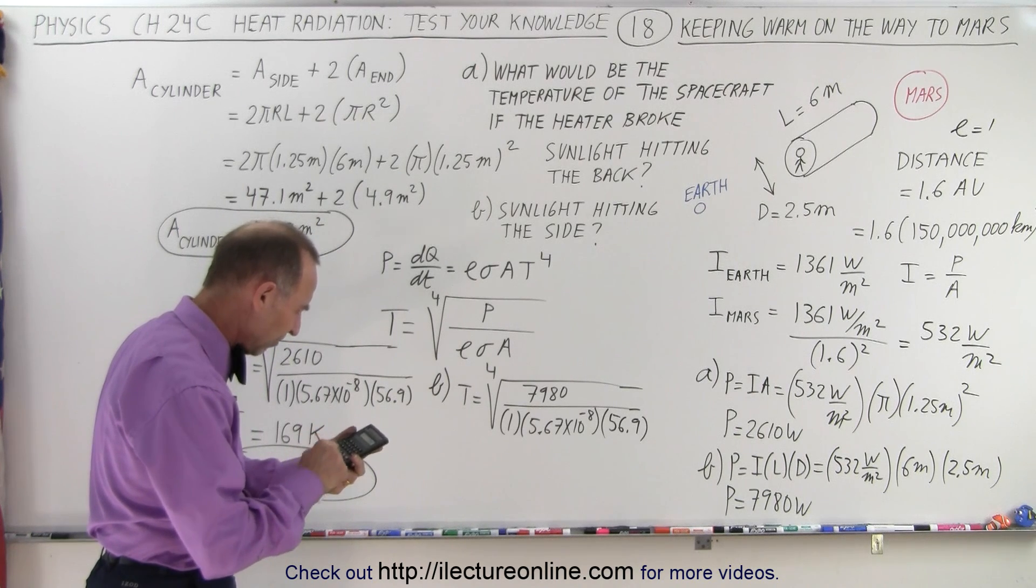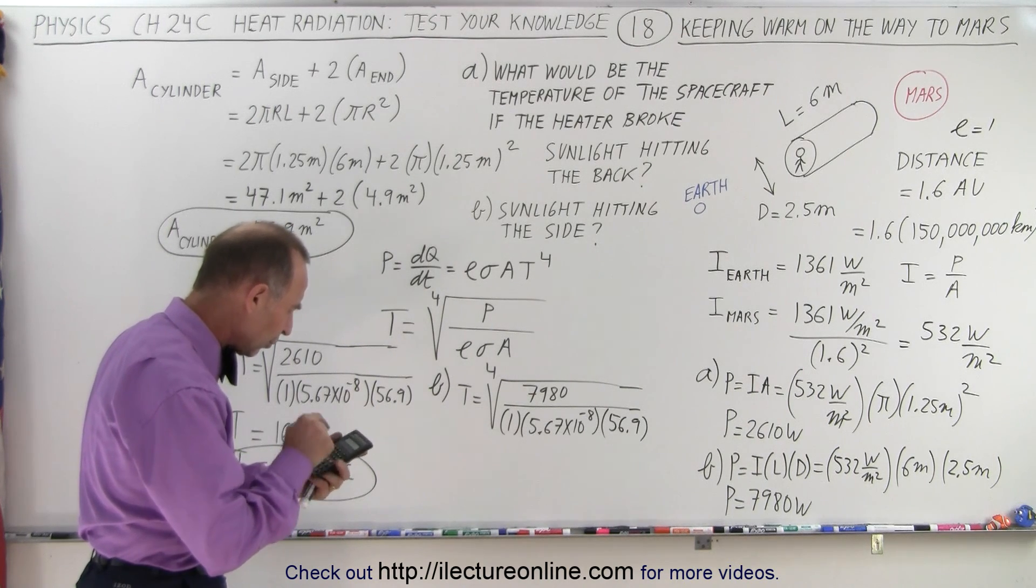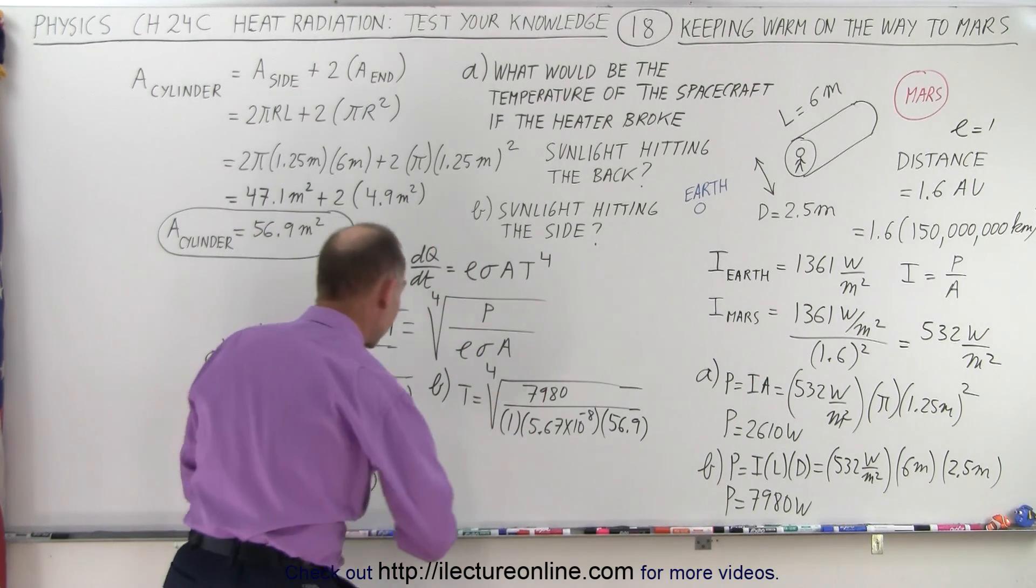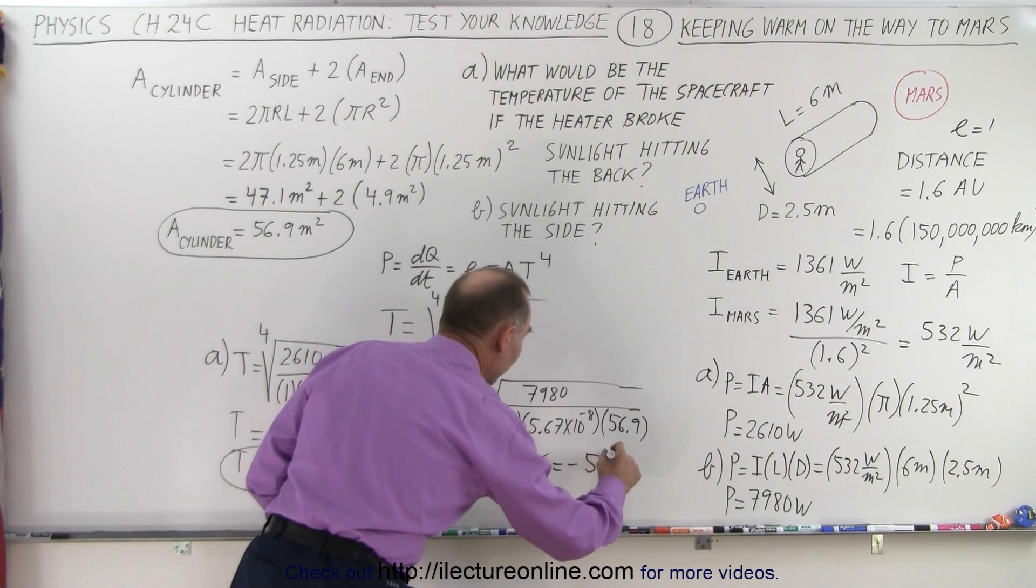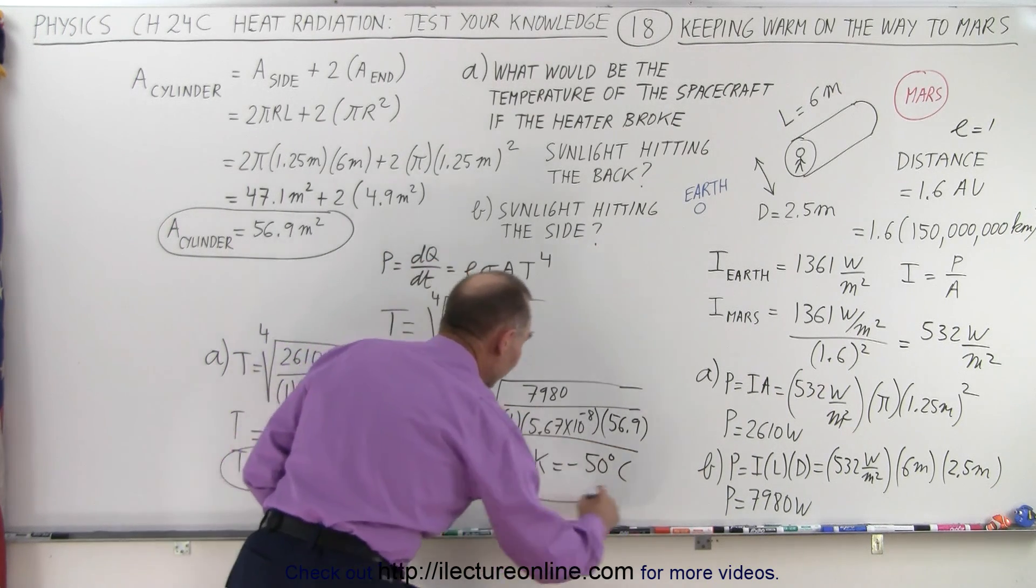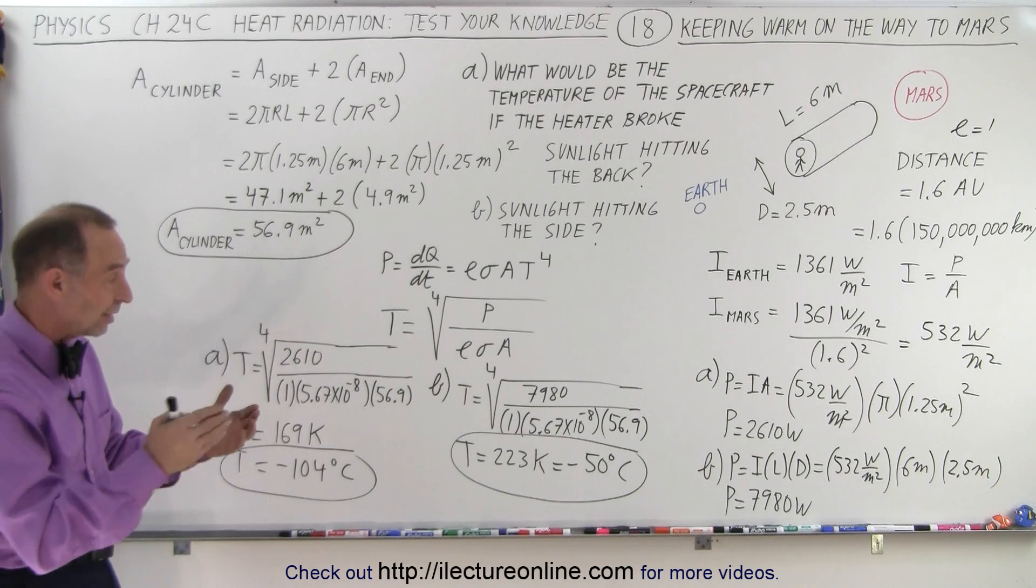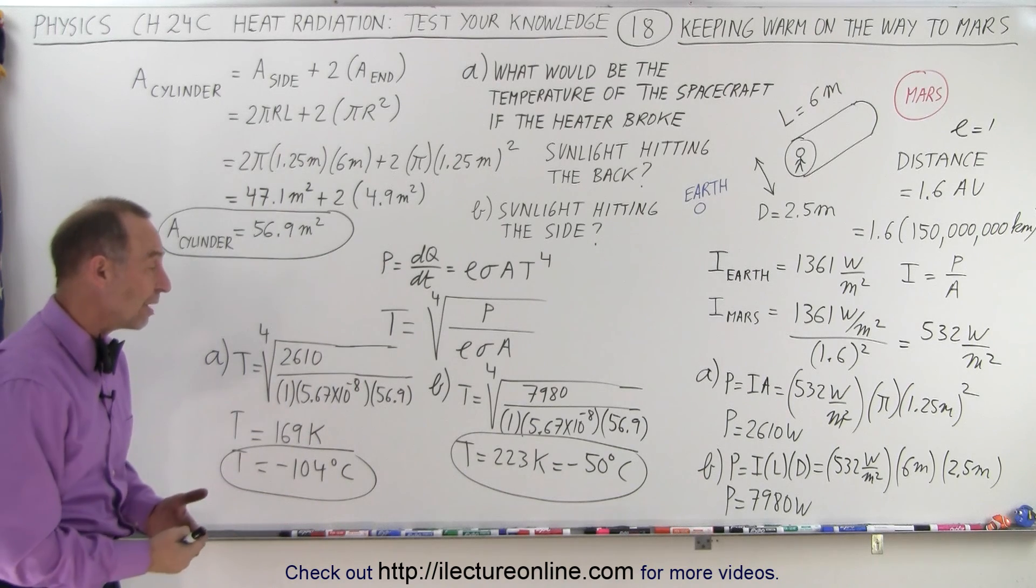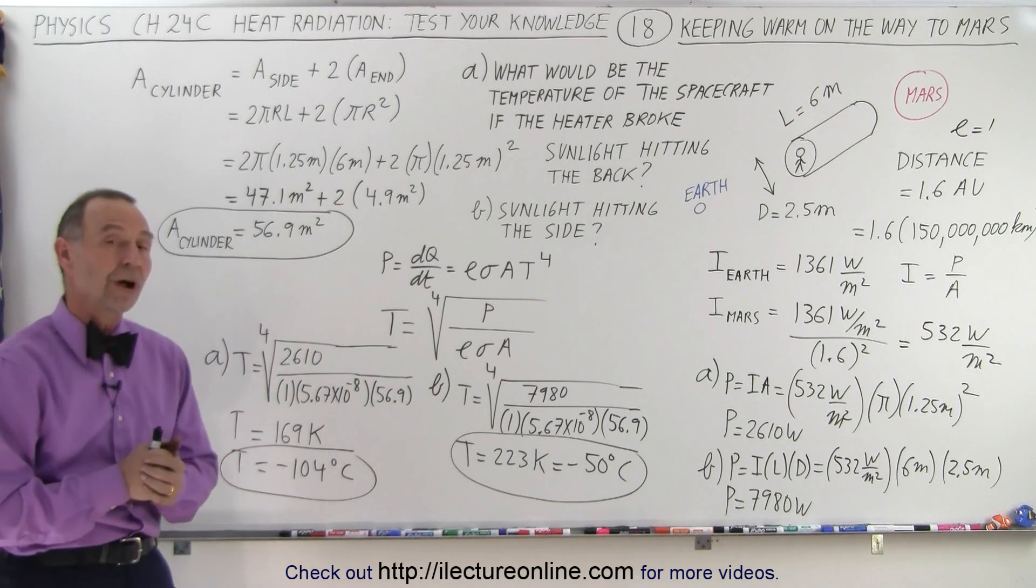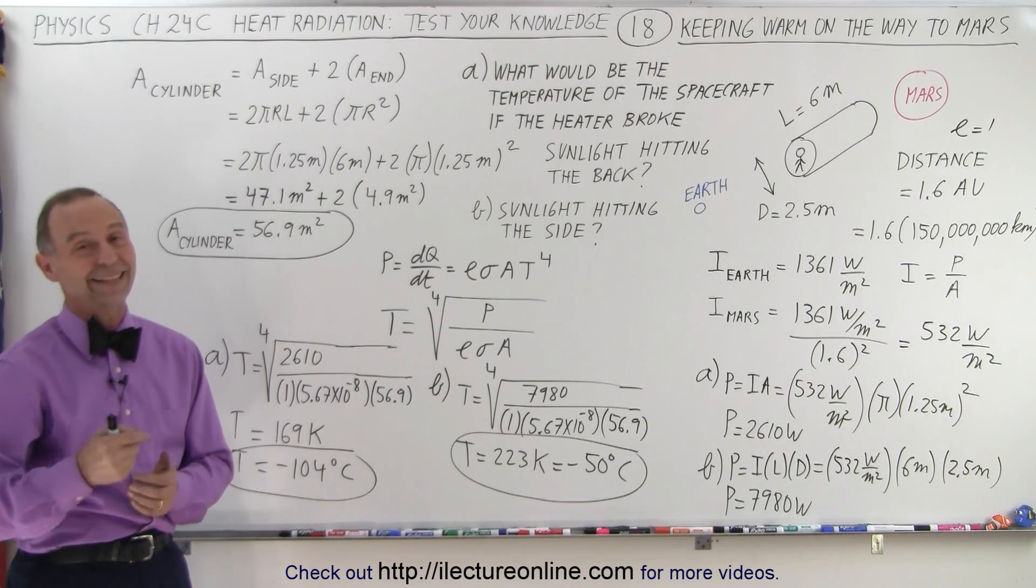Let's see what the equilibrium temperature would be now for the astronauts in this particular case. So 7,980, divide by 5.67, e38 minus, divide by 56.9, take the fourth root of that. So now we're up to 223 Kelvin. So temperature equals 223 Kelvin, which is equal to minus 50 degrees Celsius. And so you can see that definitely, if they were in such a predicament and they're approaching Mars, now they're quite far away from the sun, they could turn their spacecraft sideways so they get the max amount of sunlight hitting the spacecraft, and the temperature would only drop to minus 50. At least, not quite as cold as minus 104. And that is how it's done.